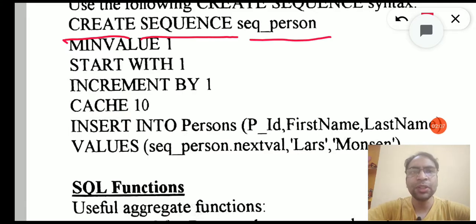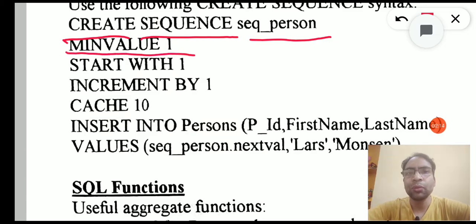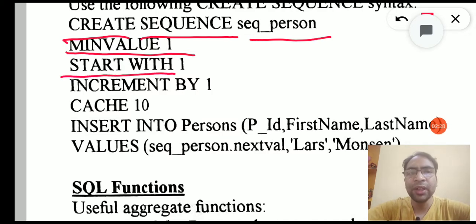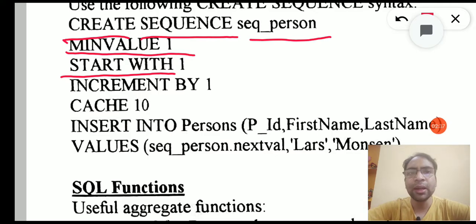Then we give the name of this particular sequence, which can be anything we would like. Then we specify MINVALUE — the minimum value of this sequence, so it will not reduce further. Here the minimum value is 1. Then START WITH means from where this sequence should begin — you can start at 0, 1, or even 10. Then INCREMENT BY specifies by which value you want to increment the ID.